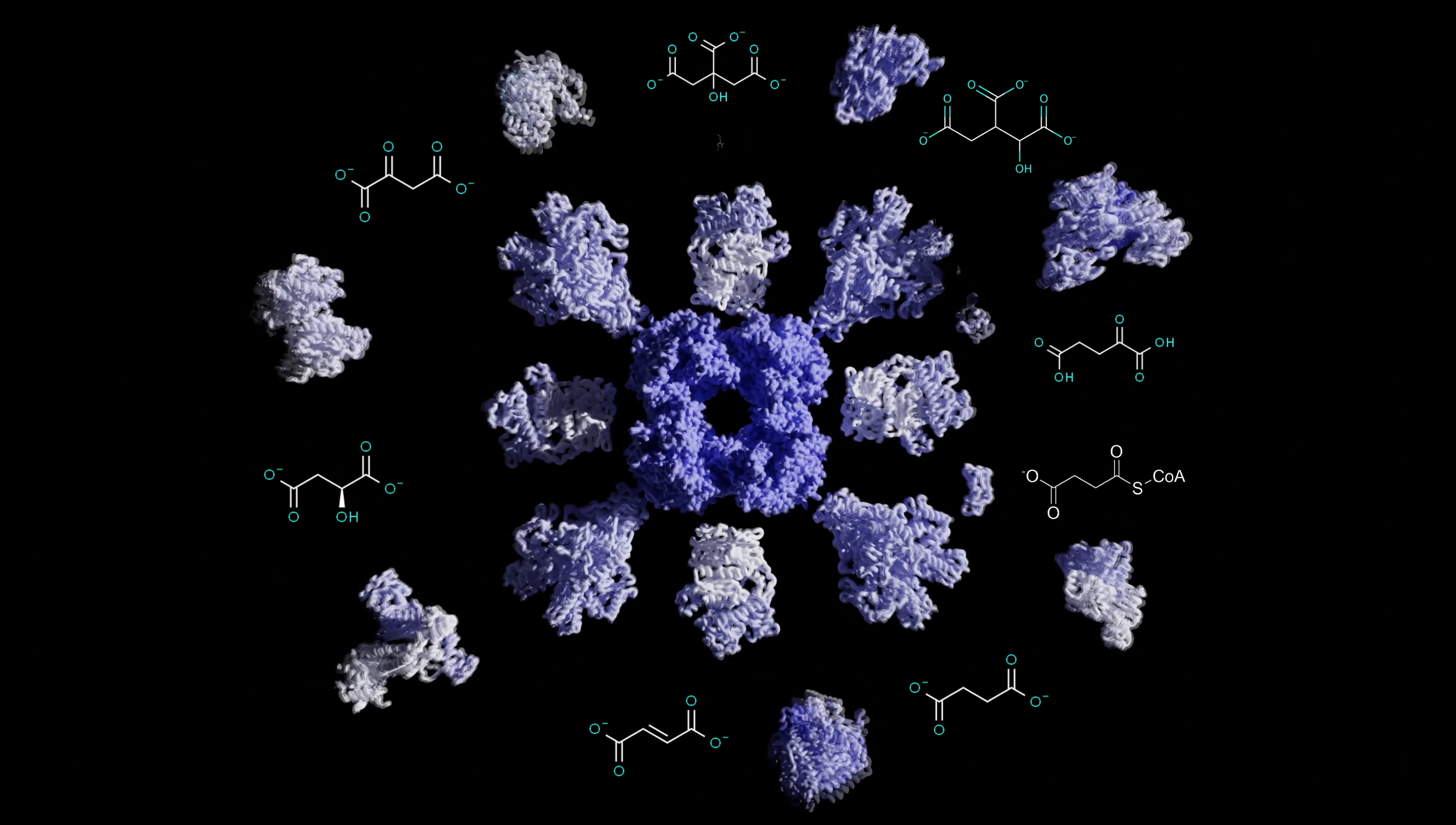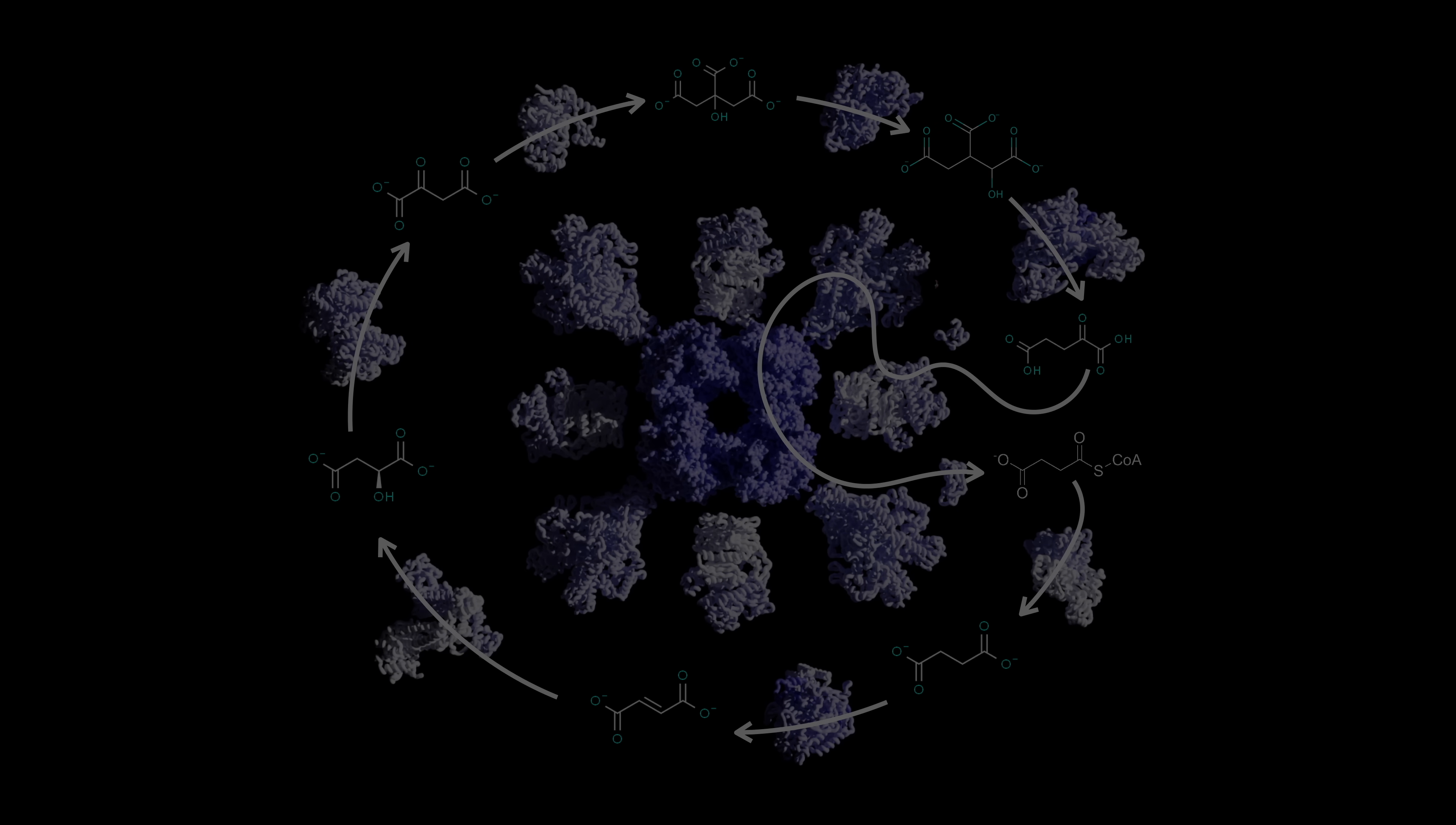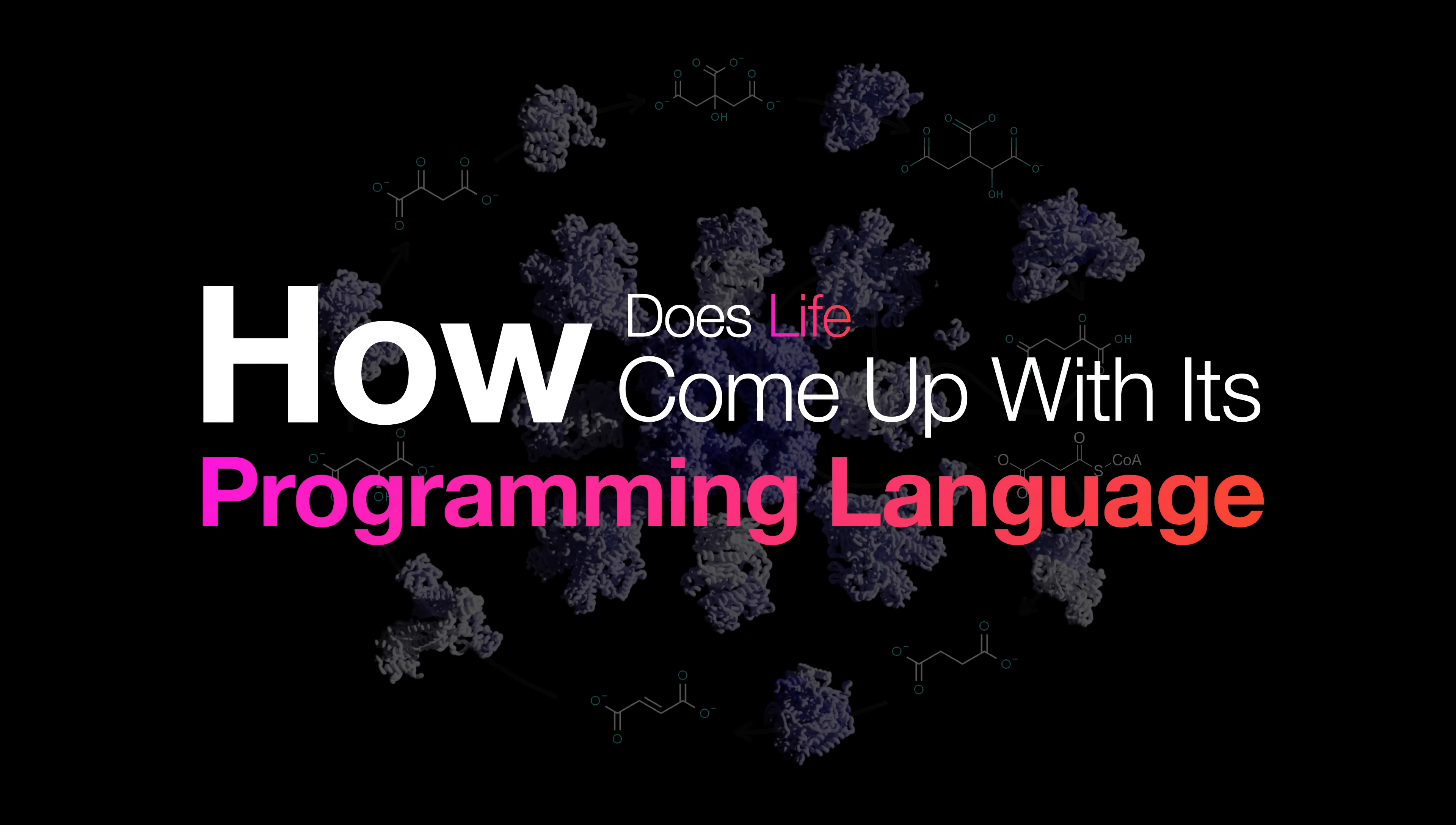This is the Krebs cycle. It's a loop programmed into the cell to extract energy from all sorts of nutrient sources. But where does it come from? How did nature come up with this design? How does life come up with its programming language?